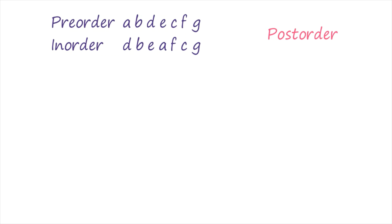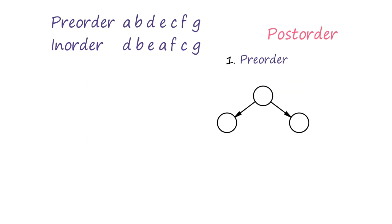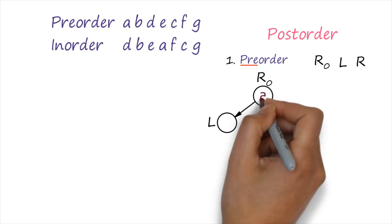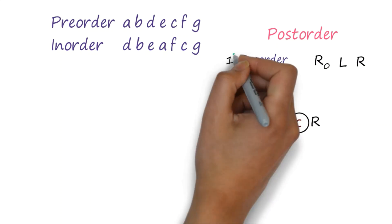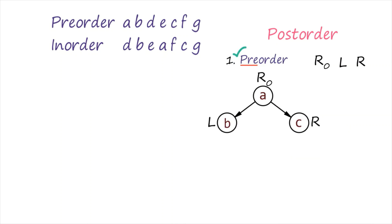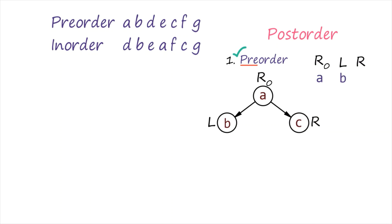We have three kinds of traversal. One is pre-order. Pre-order traversal means: say this is the tree — this is root, this is left, this is right. Pre means first we will process root, then left child, then right child. So if the nodes are A, B, and C, performing pre-order traversal gives root, then left, then right.